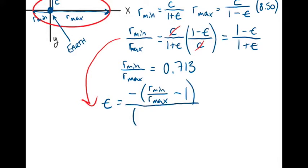Over rmin over rmax plus 1. Plugging that into the calculator again, we get an eccentricity of 0.168.